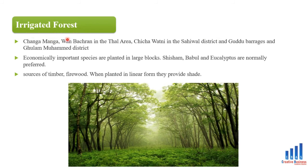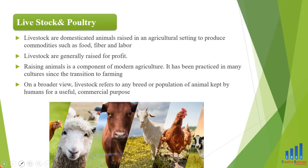Irrigated forests — Changa Manga، Wan Bachran اور Chichawatni جیسے جنگلات اس میں شامل ہیں۔ پاکستان کا سب سے بڑا irrigated forest Changa Manga ہے۔ Economically important species جیسے Shisham اور Babul کی لکڑیاں یہاں سے حاصل ہوتی ہیں۔ Sources of timber اور firewood۔ جب linear form میں لگائے جائیں تو یہ shade بھی فراہم کرتے ہیں۔